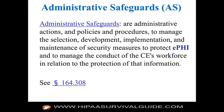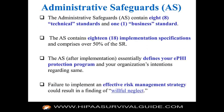The administrative safeguards are administrative actions, policies, and procedures to manage the selection, development, implementation, and maintenance of security measures to protect ePHI. You can think of the administrative safeguards as defining your security rule implementation program — the policies, procedures, etc. that define the program. The administrative safeguards contain 18 implementation specifications that comprise over 50% of the security rule, so if you're looking for a place to start, this is it.